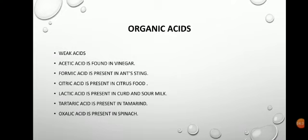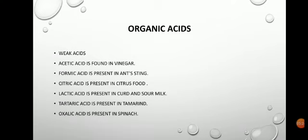Now let's discuss how you can test the presence of an acid in a substance using a litmus test. Take some lemon juice in a test tube and add a little water to make a solution. Put a drop of the lemon juice solution on a strip of red litmus paper using a dropper — there is no change in color, meaning the lemon juice is not basic. Then put a drop on a blue litmus paper — it turns red immediately, showing lemon juice is acidic. Organic acids are weak acids, not harmful to eat or drink.